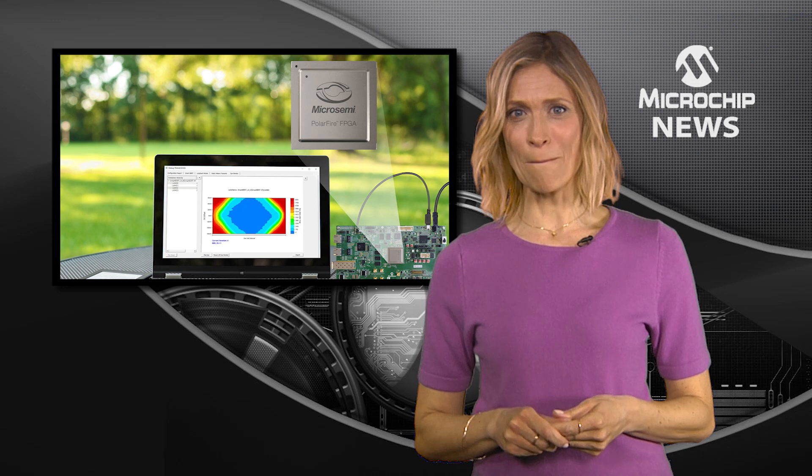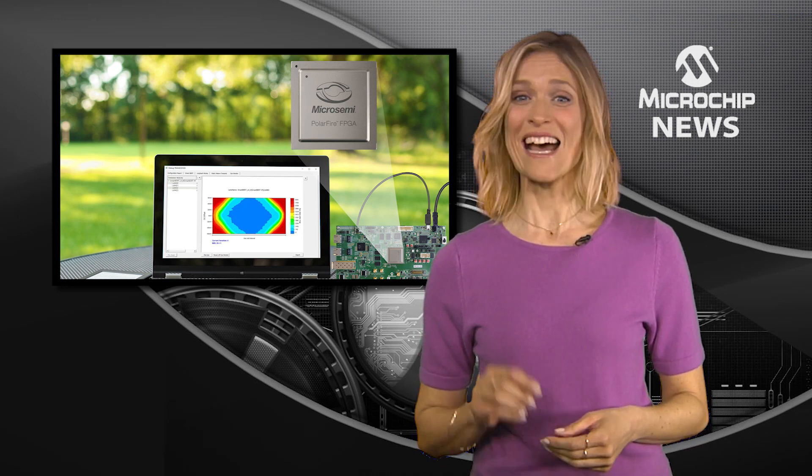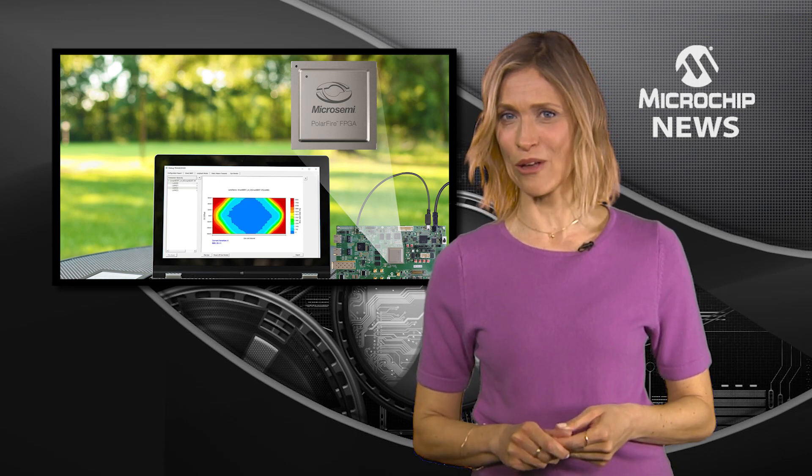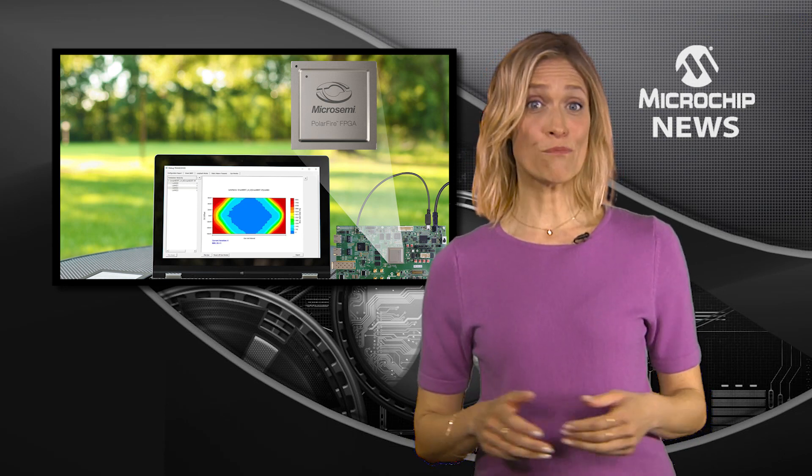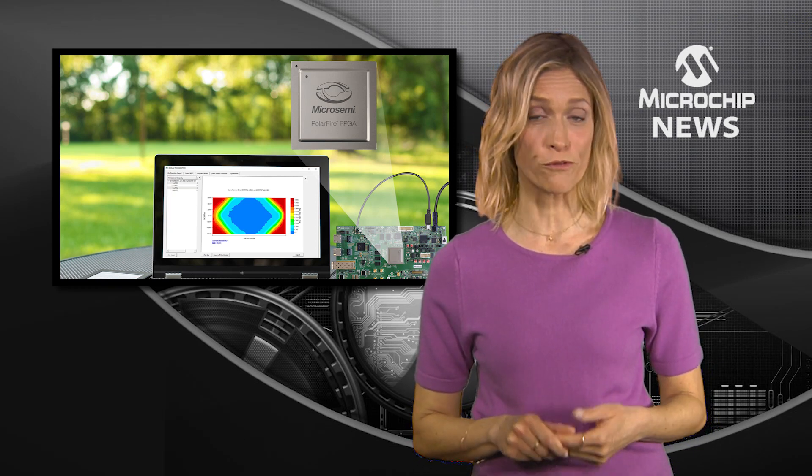The PolarFire BMR gives you class leading power dissipation, a small form factor and 10.8 nanosecond lock time. You can save board space with the BMR's low cost small form factor pluggable footprints.